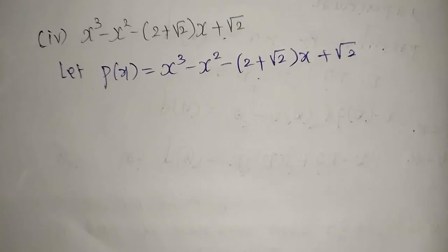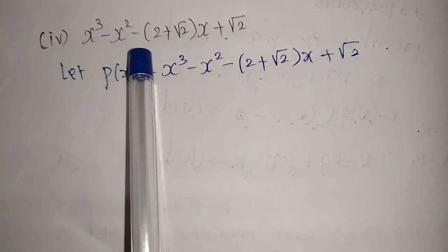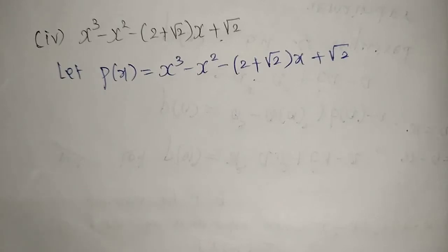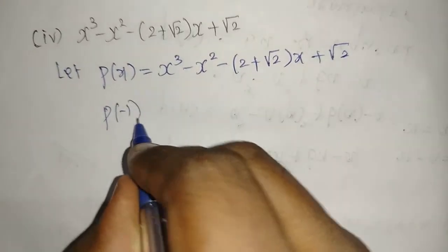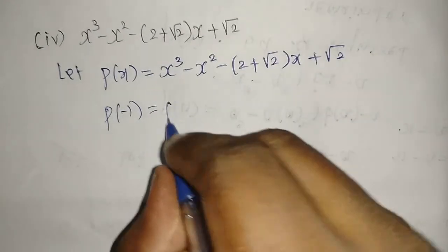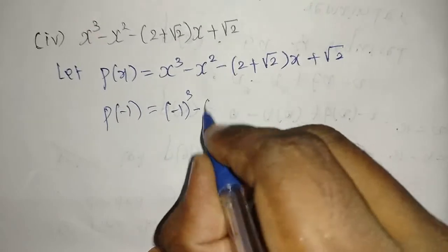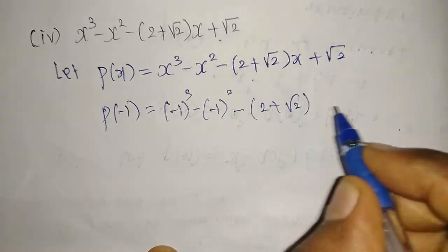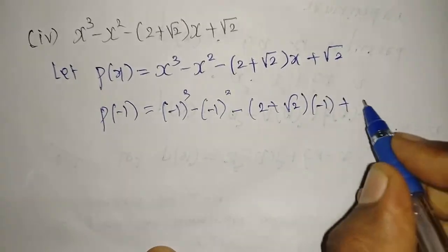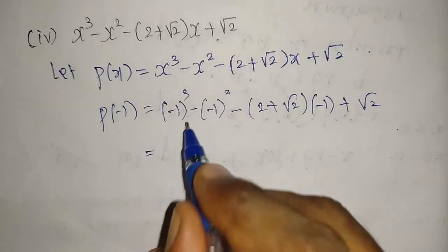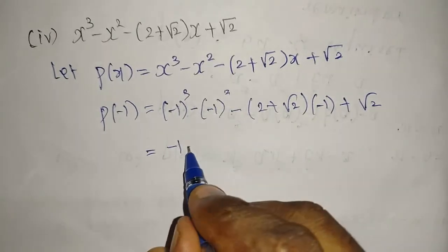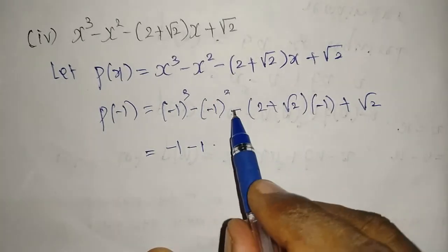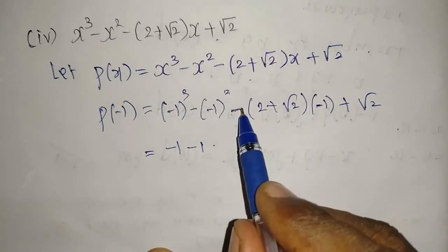Now the fourth one: x³ - x² - (2 + √2)x + √2. I take the full polynomial as p(x). The x value is -1, so we substitute: p(-1) = (-1)³ - (-1)² - (2 + √2)(-1) + √2. Now (-1)³ gives -1, and (-1)² gives +1 but with the negative outside it becomes -1.